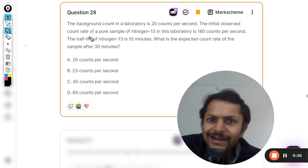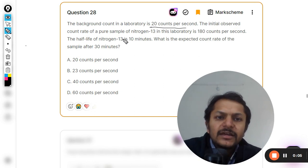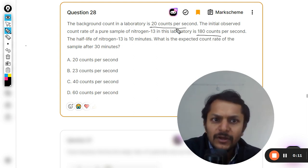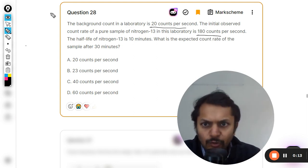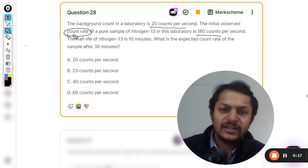In this question, the background count in a laboratory is given as 20 counts per second. The initial observed count rate of a pure sample of nitrogen in this laboratory is 180. Count rate means the device which is measuring has measured it to be 180.